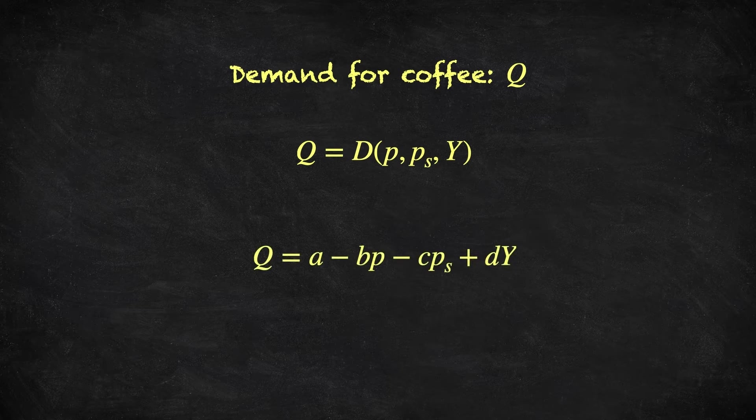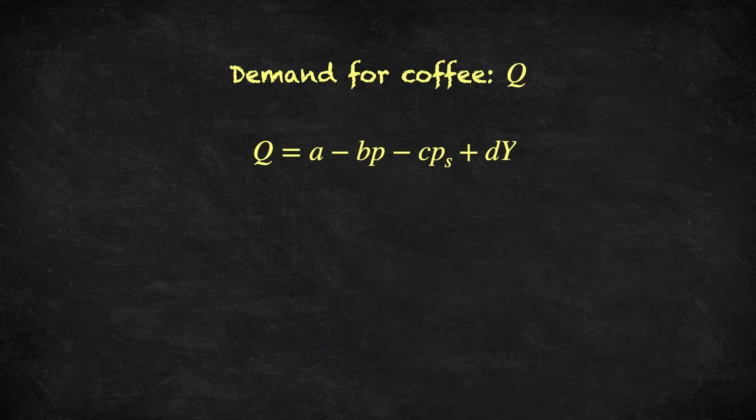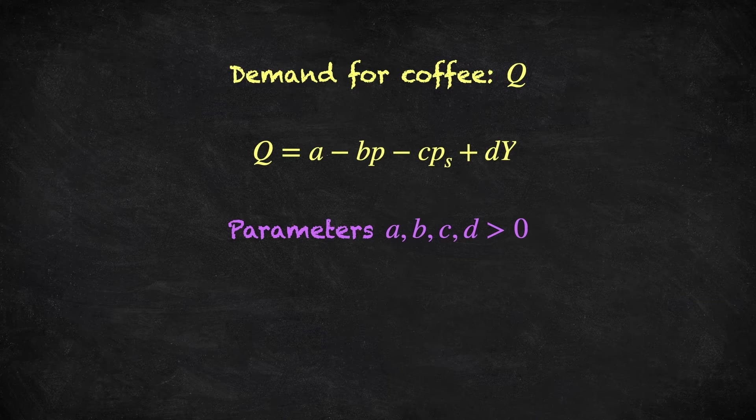In this case, we could write Q is equal to A minus B times the price of coffee, minus C times the price of sugar, plus D times the consumer's income, where A, B, C and D are all positive numbers, the parameters of this demand function.